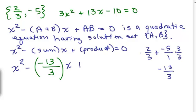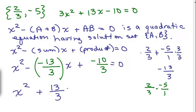Times x plus the product. What's the product? The product is 2/3 times -5 over 1. That's -10/3, plus -10/3. Well, that doesn't look exactly like this, does it? Let's rewrite this. We have x² + 13/3 x - 10/3 = 0. Is this equivalent to this?